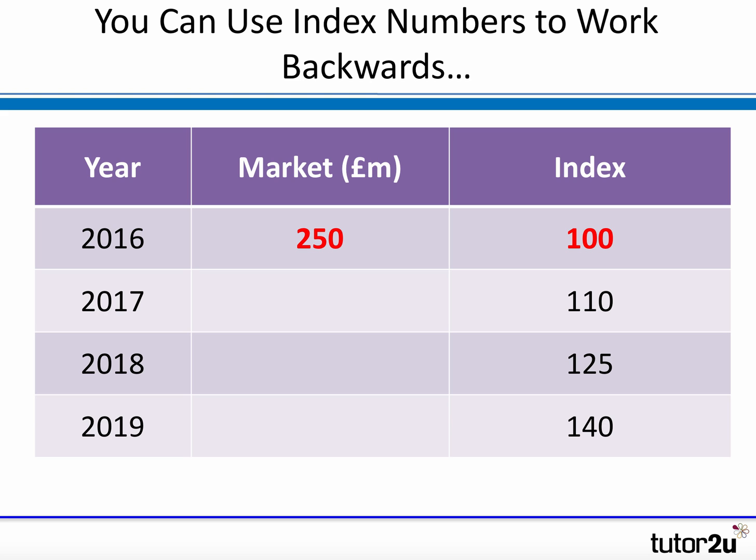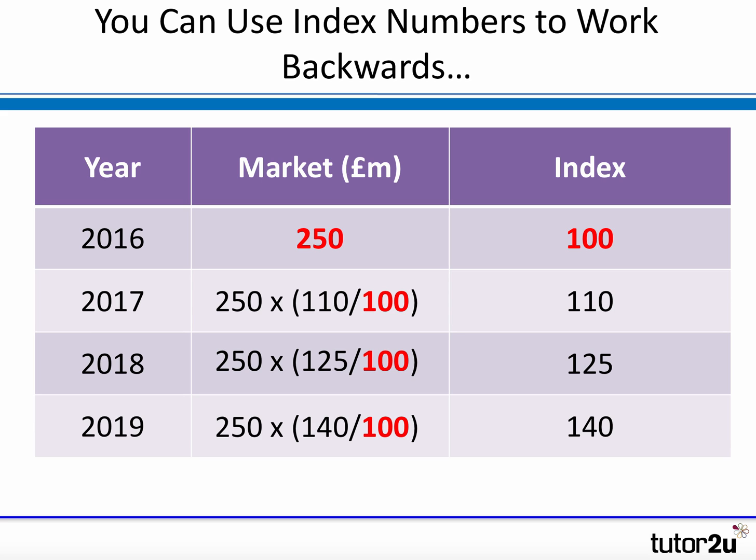With the index, you're given the percentage change and simply use that to work backwards to find the value. Our base here is 2016, with an index of 100 and a market size of 250. To calculate 2017, we express the base figure of 250 in relation to how the index has changed: 110 divided by the base of 100 times 250. Similarly for 2018 and 2019, we express the base and work it out by reference to how much the index has changed compared with the base of 100. Pause the video to have a go at calculating the market size.